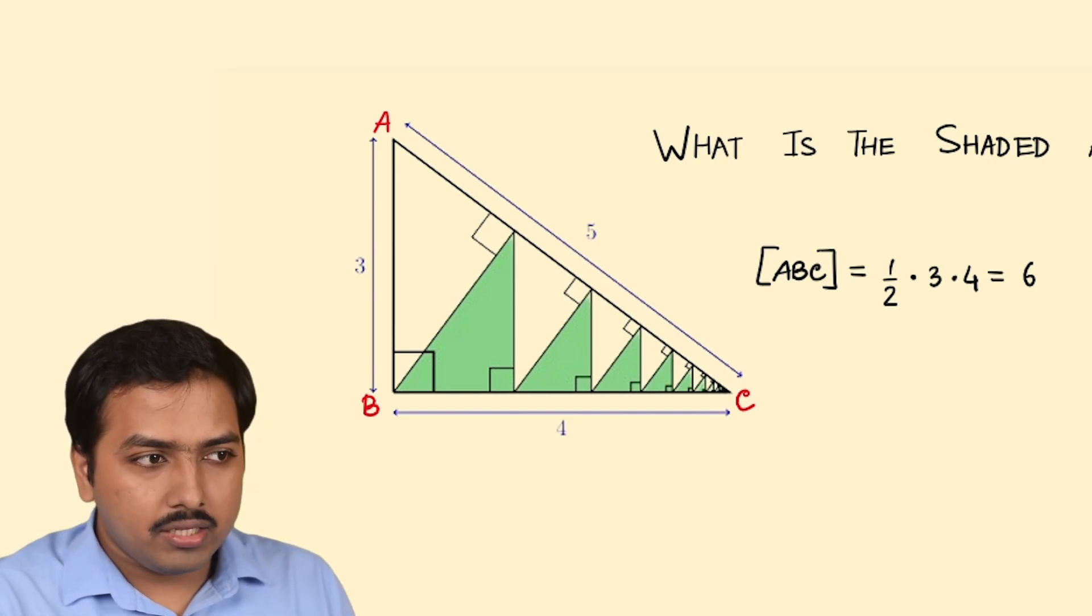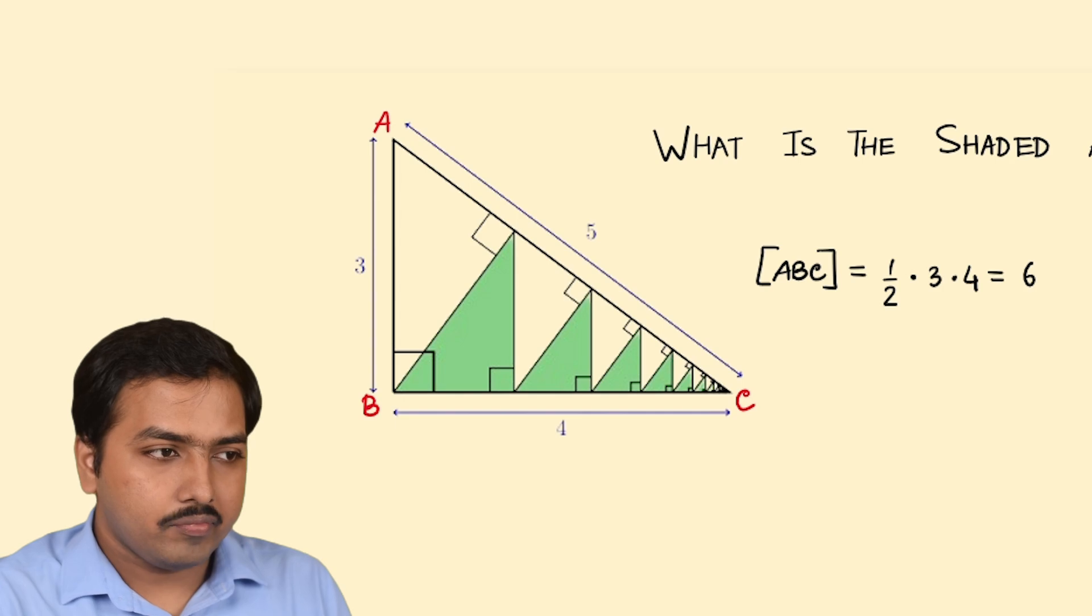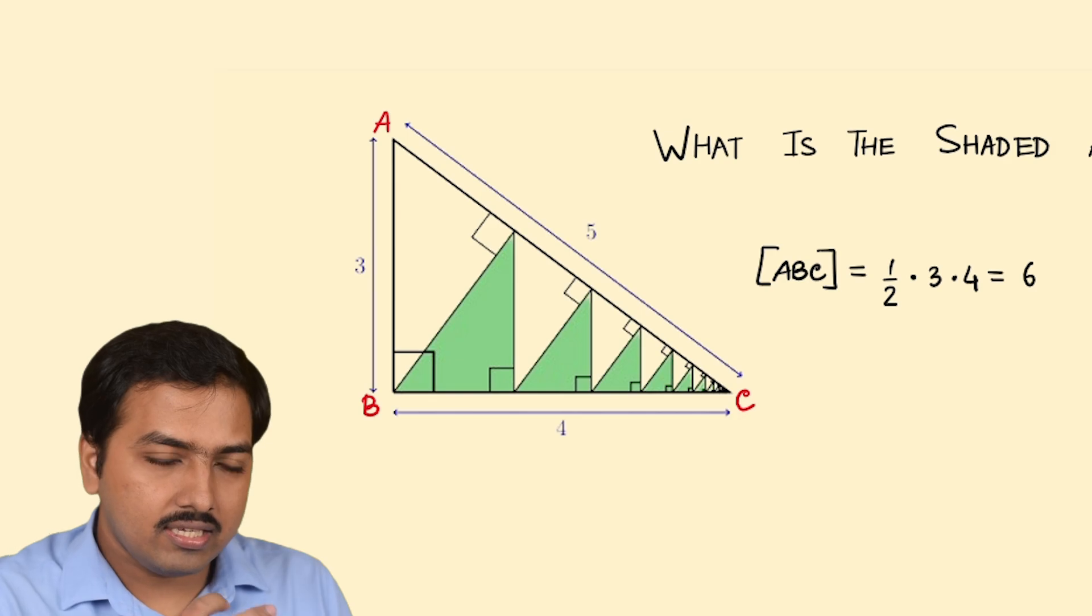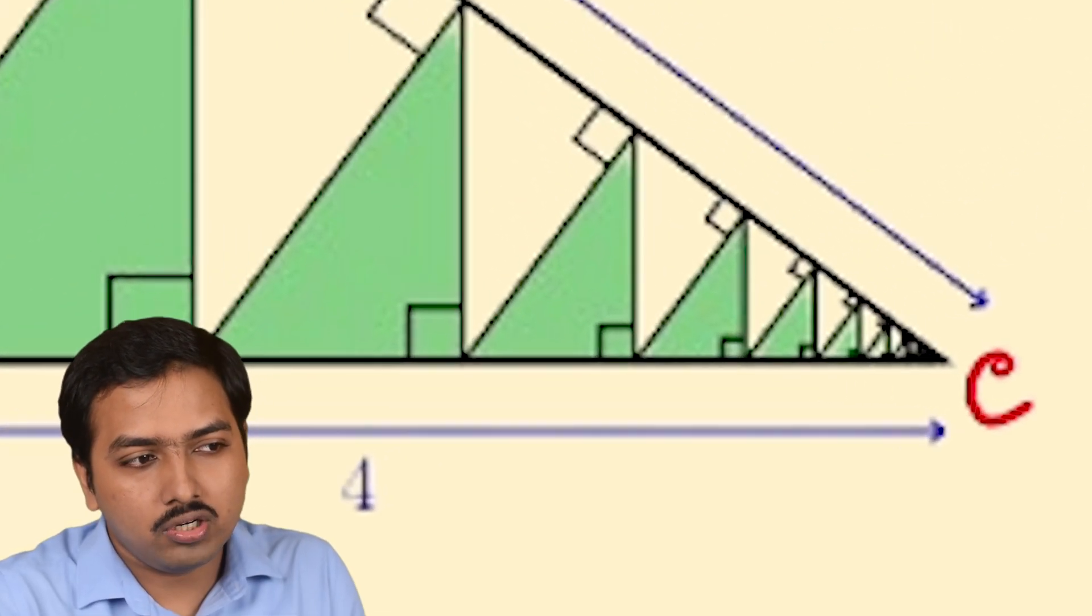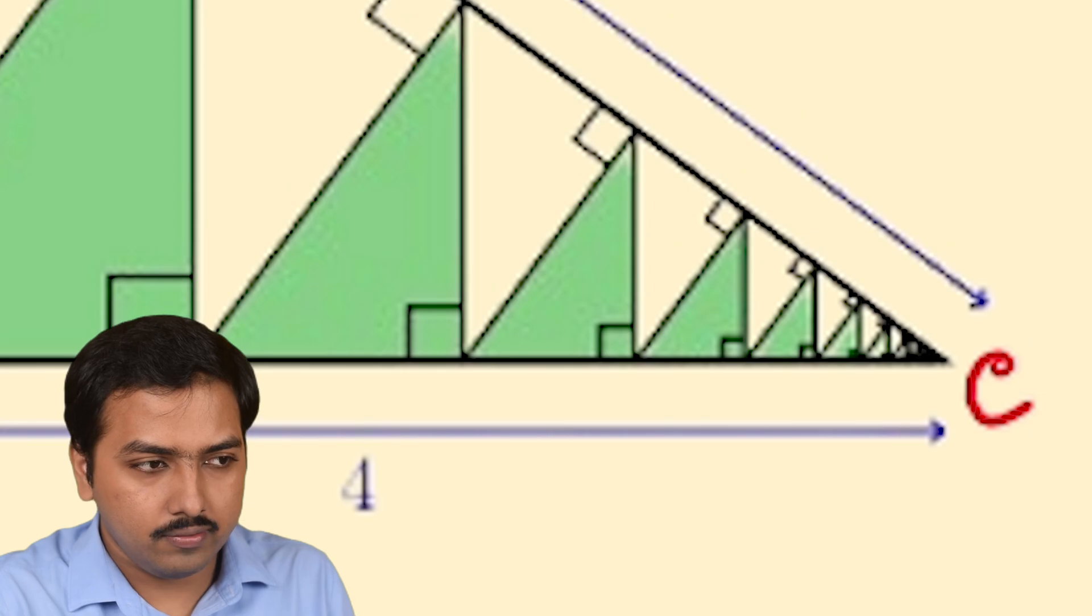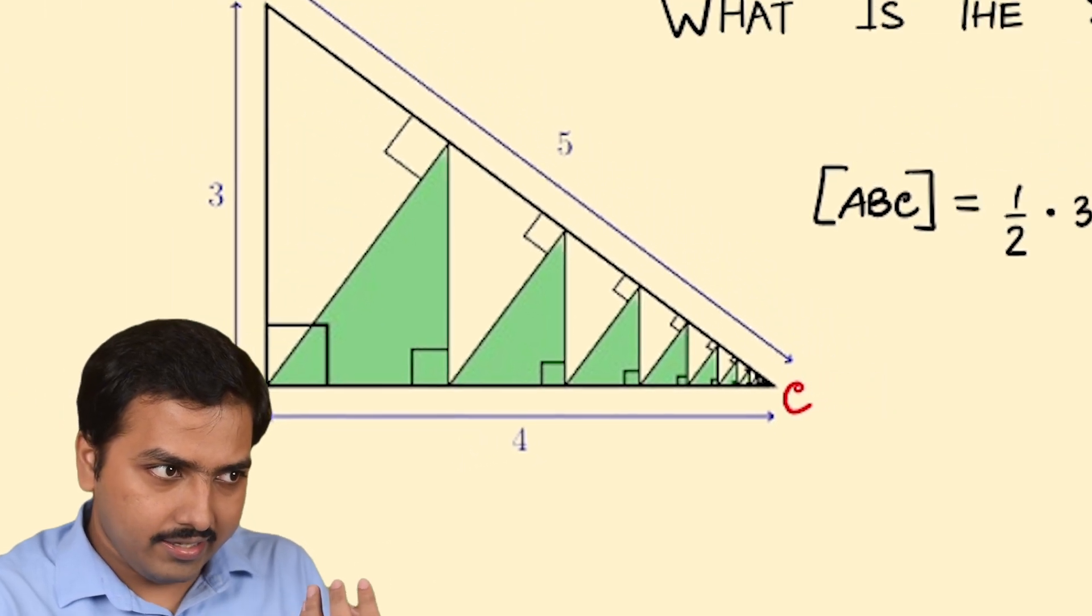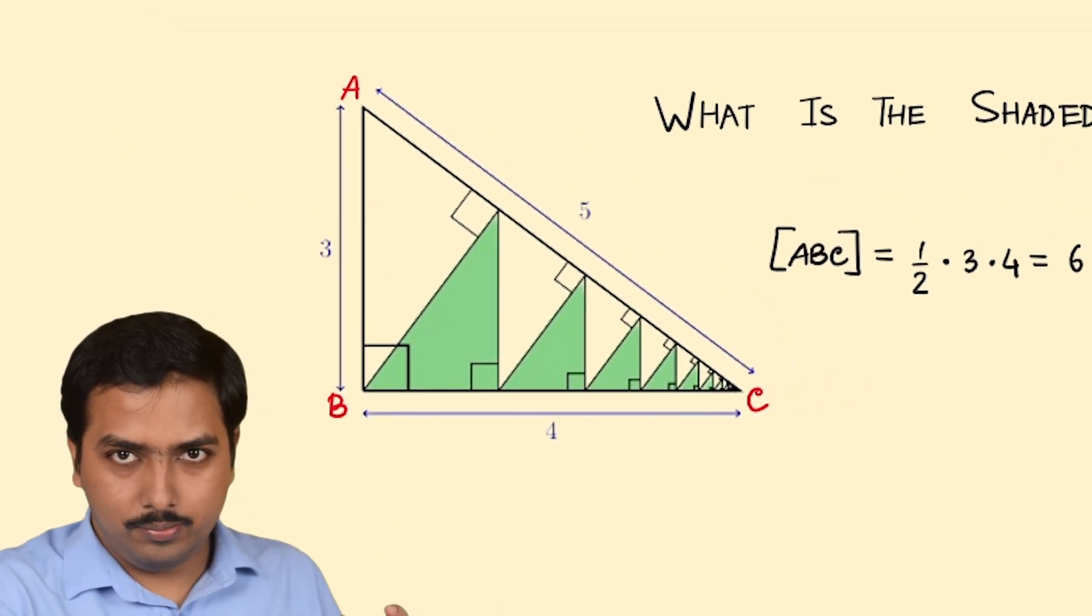So as I mentioned about homothety, if you can look into the picture carefully, you can understand it is a case of homothety. If you go to the very smaller, very close to C, you can obtain a very smaller triangle. Eventually it is getting larger, larger, larger, larger, larger, larger and get into the entire triangle ABC.